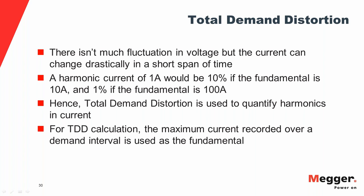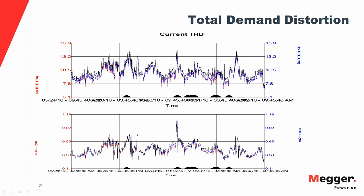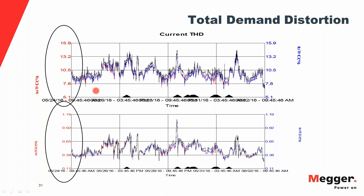Comparing THD and TDD charts from the same recording — THD on top, TDD below — they follow the same pattern, but the Y-axis values differ drastically. THD ranges from 7.8% to 14%, while TDD values remain within about 1%. This illustrates why TDD is a more stable and meaningful metric for current harmonic analysis.